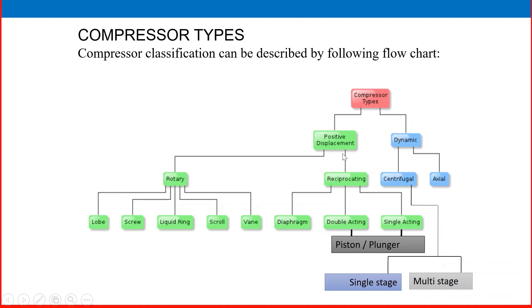All of these we will discuss one by one in future videos. In rotary, the sub-classifications include: lobe compressor, screw compressor, liquid ring, scroll, and vane.